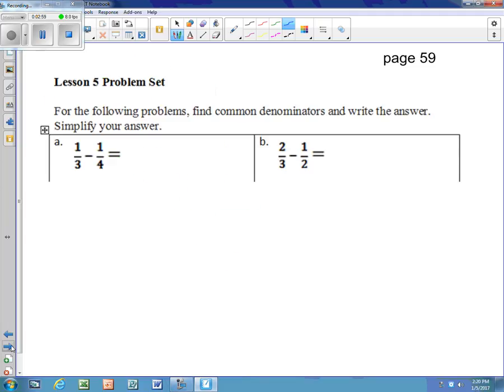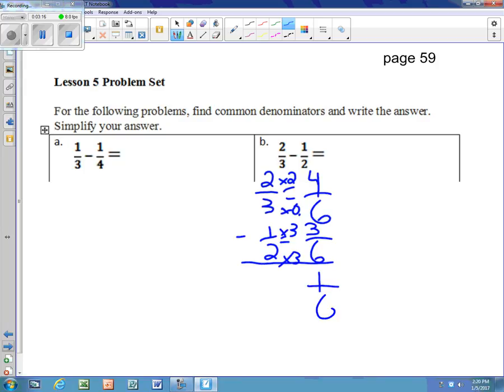We just did 1/3 minus 1/4 on the other page, so we'll do 2/3 minus 1/2. The common denominator is 6. This is times 2, so we must do times 2, and we get 4. And times 3, and times 3, and we get 3. And we end up with 1/6.